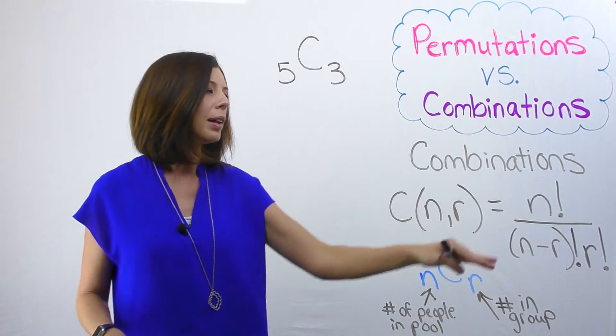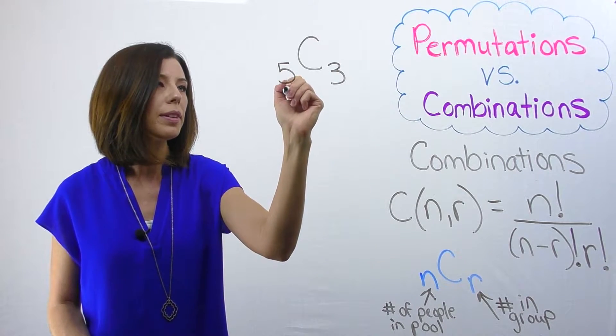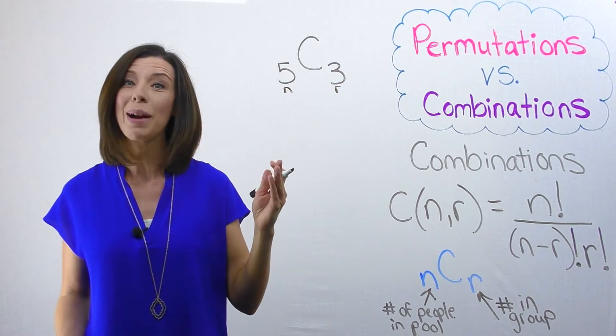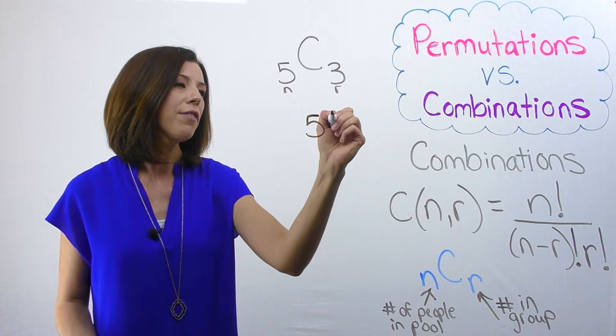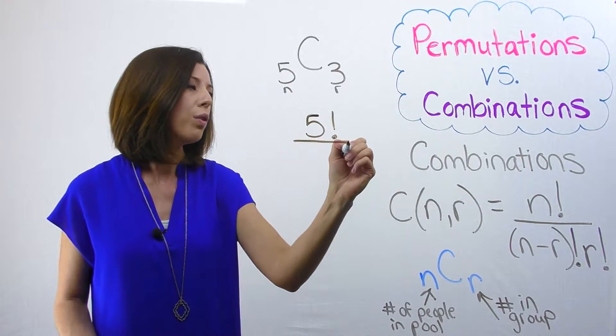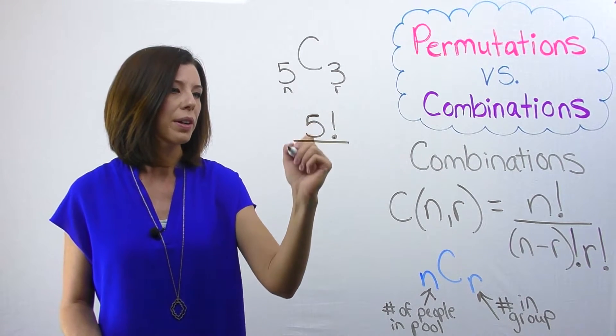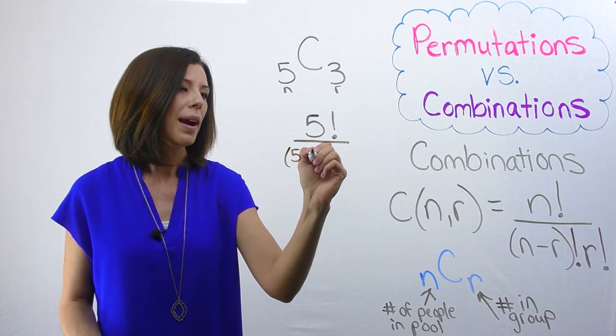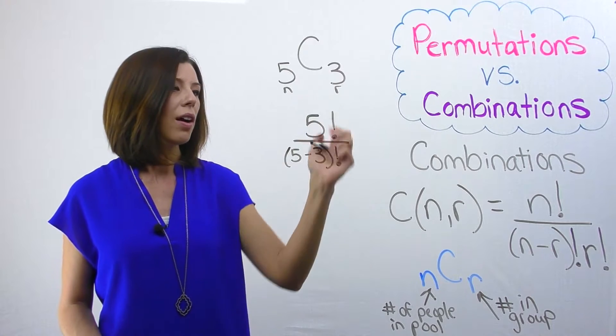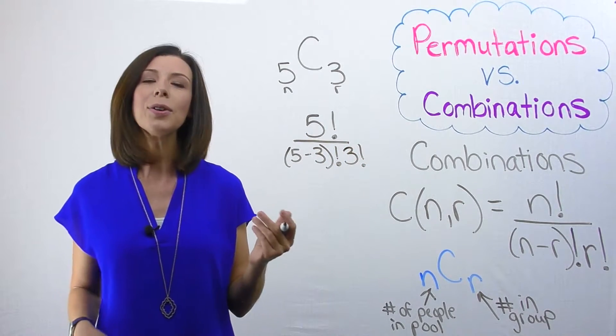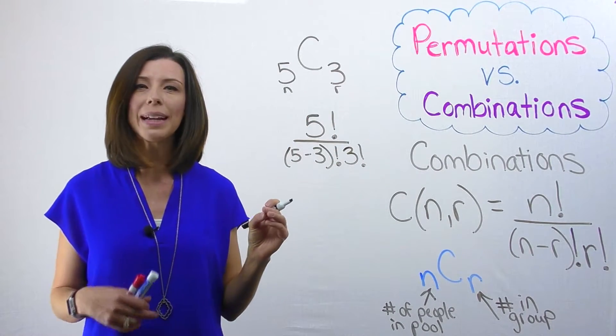Next, we're going to go ahead and plug this in and solve. I can see that my N is five, so I'm going to have five factorial over, then I'm going to do N minus R factorial, so five minus three factorial, multiplied by my R again with a factorial. I can go ahead and write this out and see how we can solve this factorial a little bit easier.